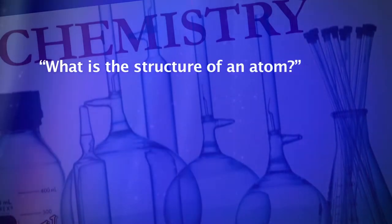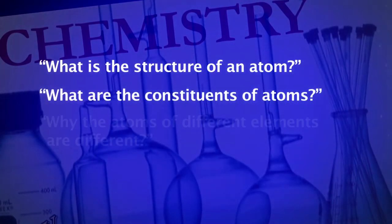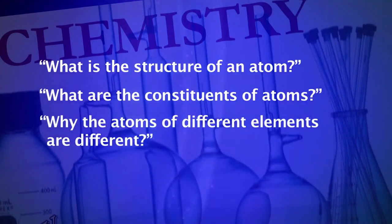Dear learners, you know that according to Dalton's atomic theory, the atoms of different elements are different, and in chemical reactions, the atoms are rearranged between different reacting substances. However, today we know that the atom is not indivisible as was thought by Dalton. The atom has a structure and contains smaller constituents in it. In this unit, we would attempt to find out answers to questions like: what is the structure of an atom, what are the constituents of atom, and why the atoms of different elements are different. We will begin with the study of discoveries of subatomic particles such as electrons, protons and neutrons.